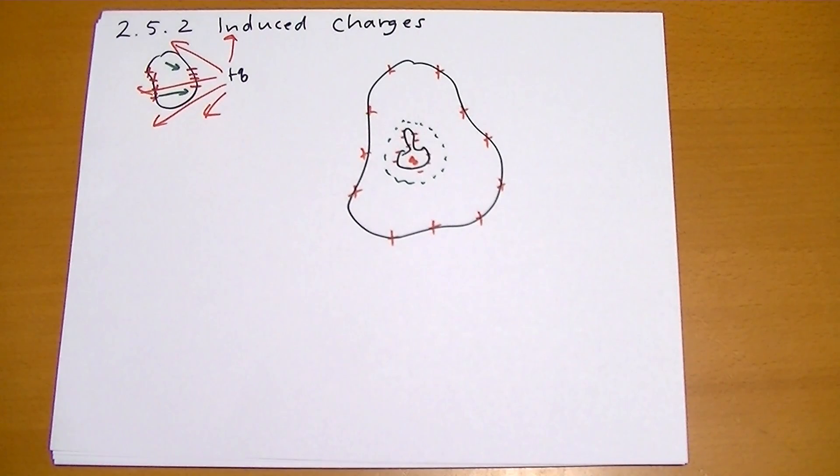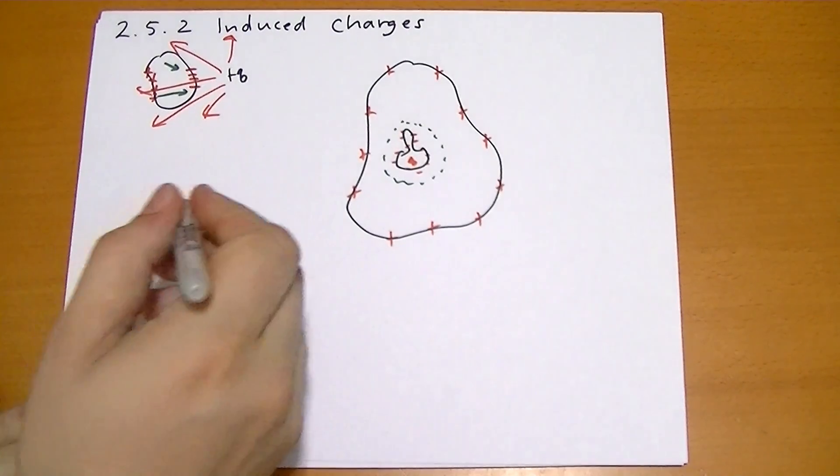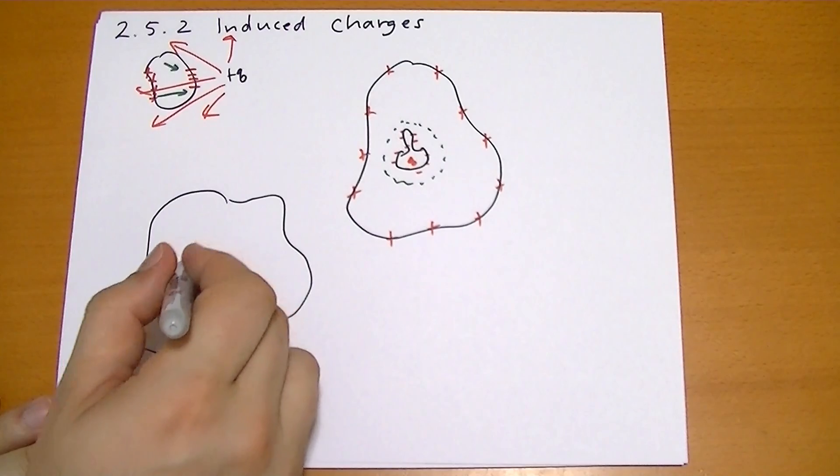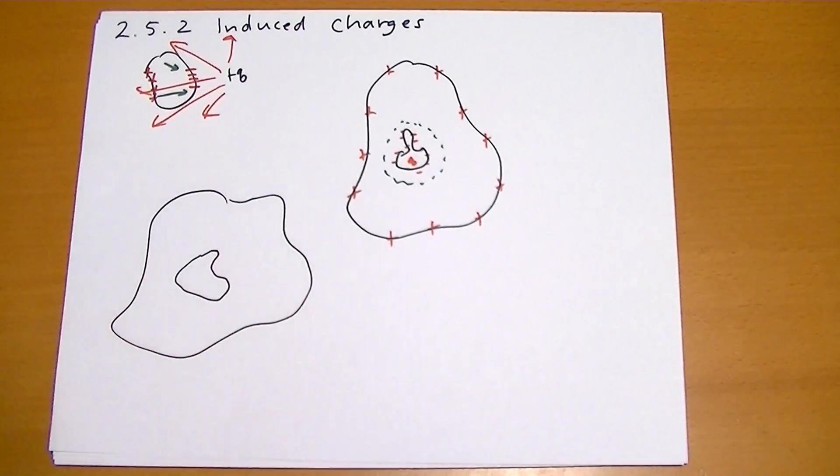This is section 2.5.2 on induced charges, the section after example 10. The question brings up this idea where you have a conductor of some weird shape with a cavity inside, and there's no charge inside that cavity.